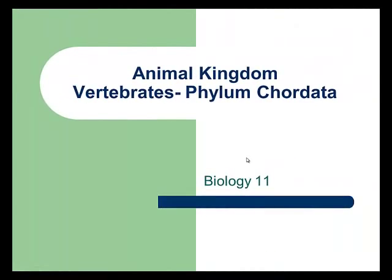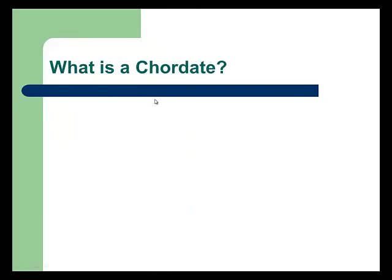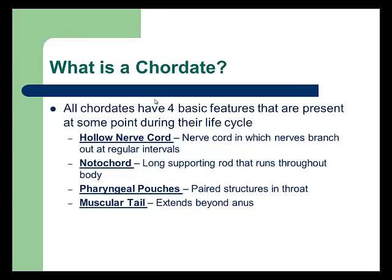Welcome back. We're looking at the last phylum of animal biology — phylum Chordata, broken down into the subphylum Vertebrata, which is the vertebrates. A chordate essentially has four things in common: a hollow nerve cord, which is essentially the spinal cord; a notochord, which is the long supporting rod that runs through the body; pharyngeal pouches; and a muscular tail. These last two mostly occur at the embryonic stage and do not carry on throughout adulthood.